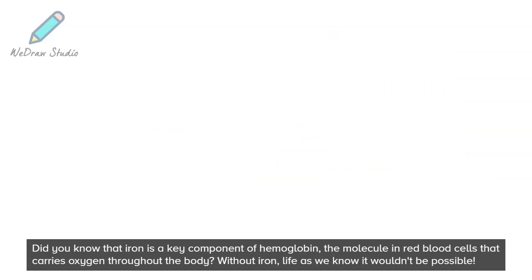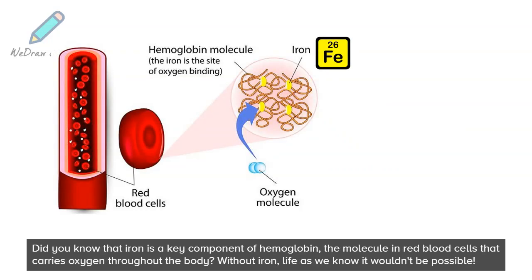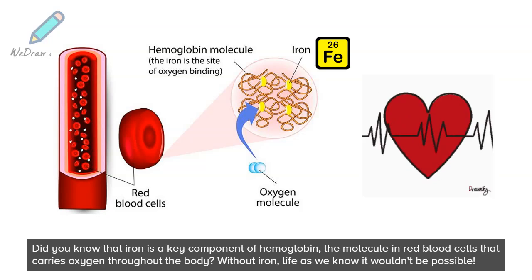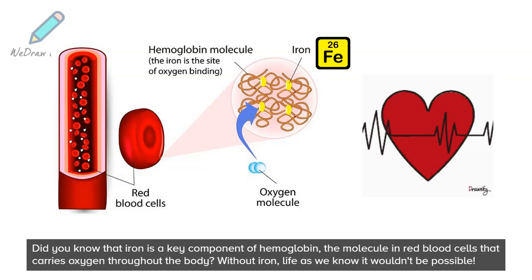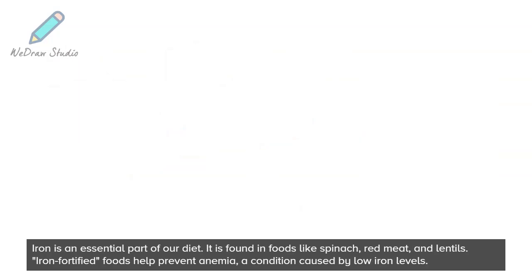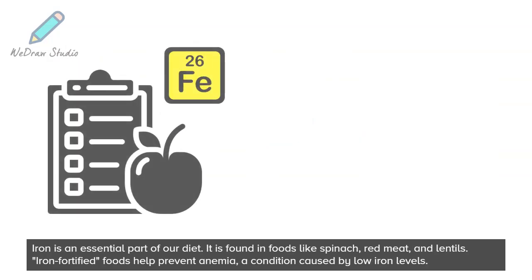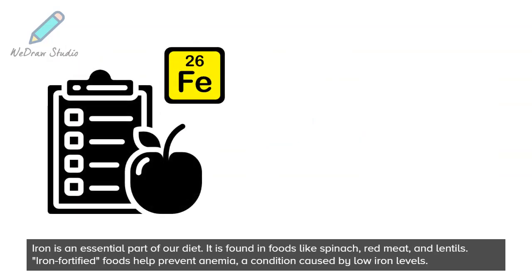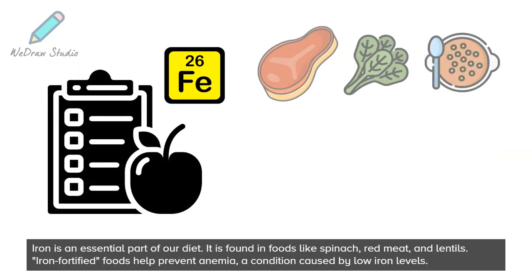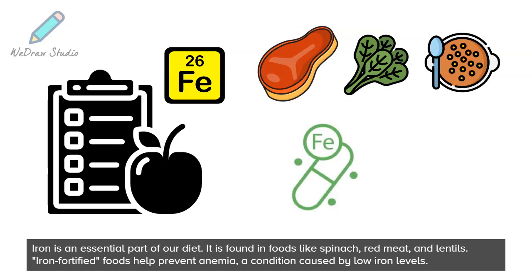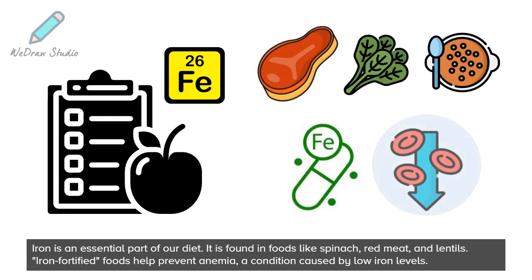Did you know that iron is a key component of hemoglobin, the molecule in red blood cells that carries oxygen throughout the body? Without iron, life as we know it wouldn't be possible. Iron is an essential part of our diet. It is found in foods like spinach, red meat, and lentils. Iron-fortified foods help prevent anemia, a condition caused by low iron levels.